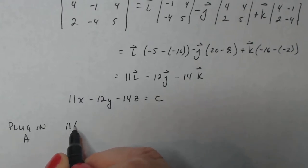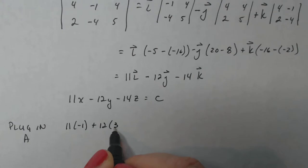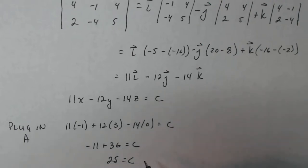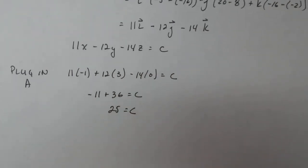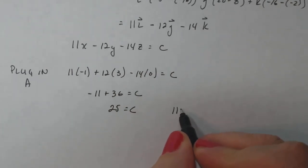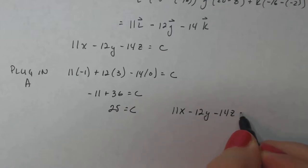So it'll be 11 times minus 1 plus 12 times 3 minus 14 times 0. That's supposed to give me my letter C. So I have minus 11 plus 36 minus 0 equals C. So what does that give me? That gives me 6 minus 1 is 5, 3 minus 1 is 2. So C is 25.